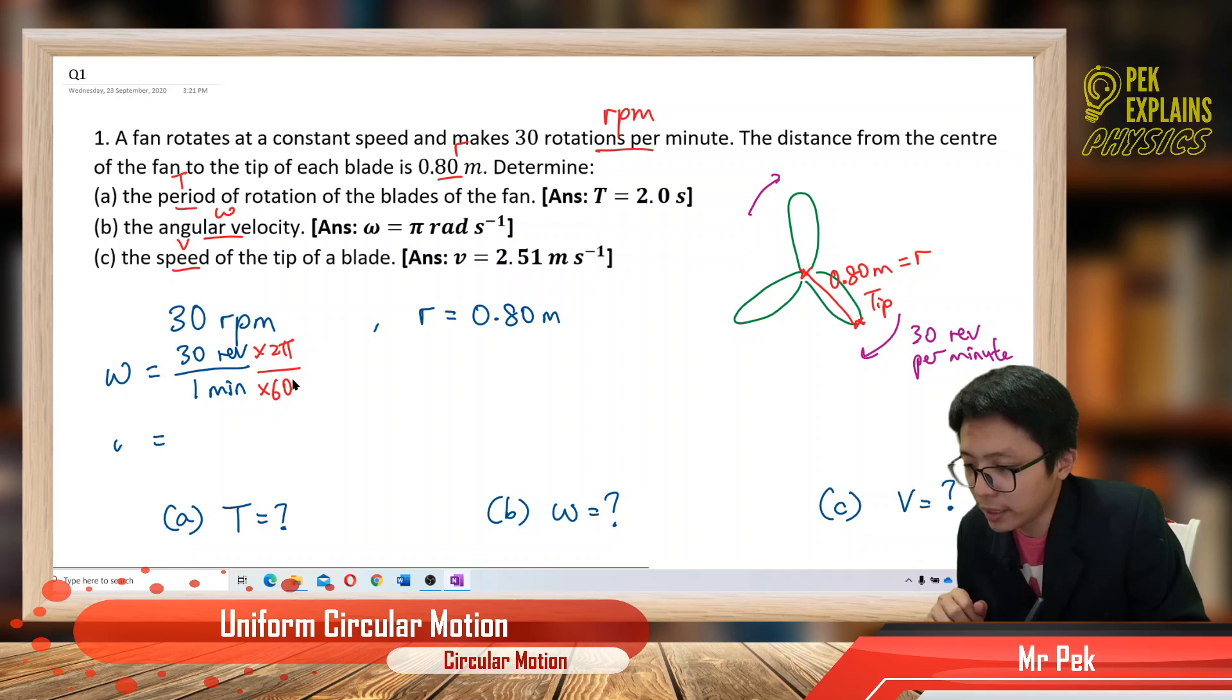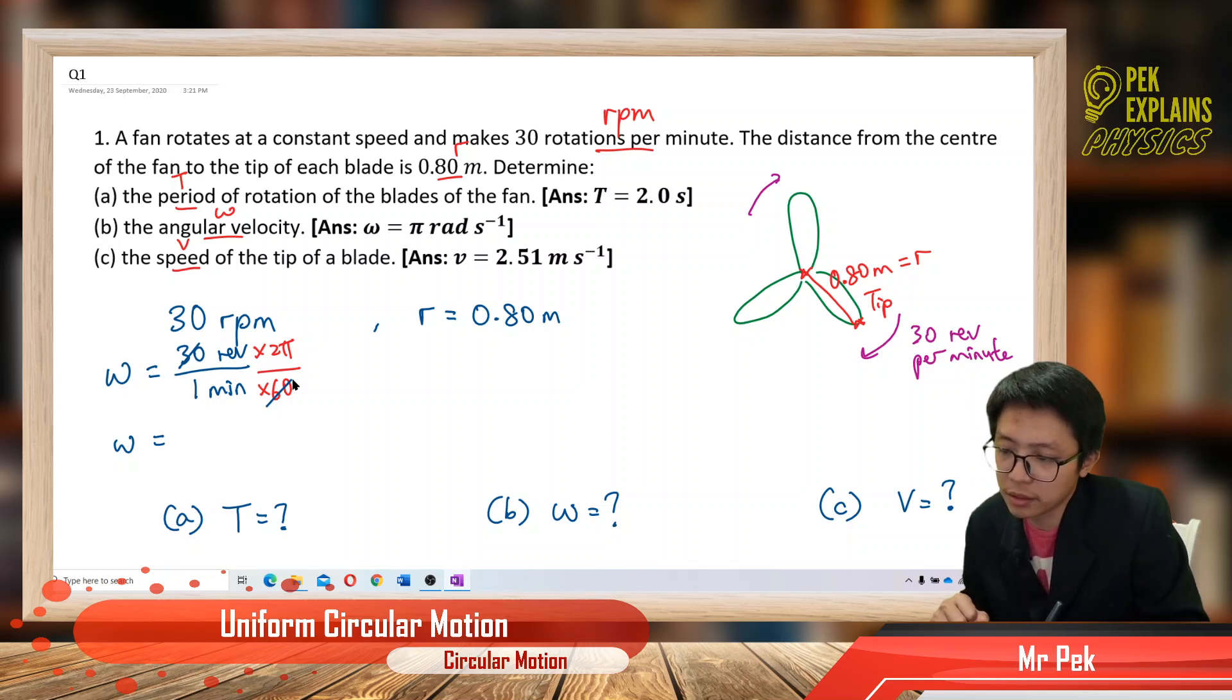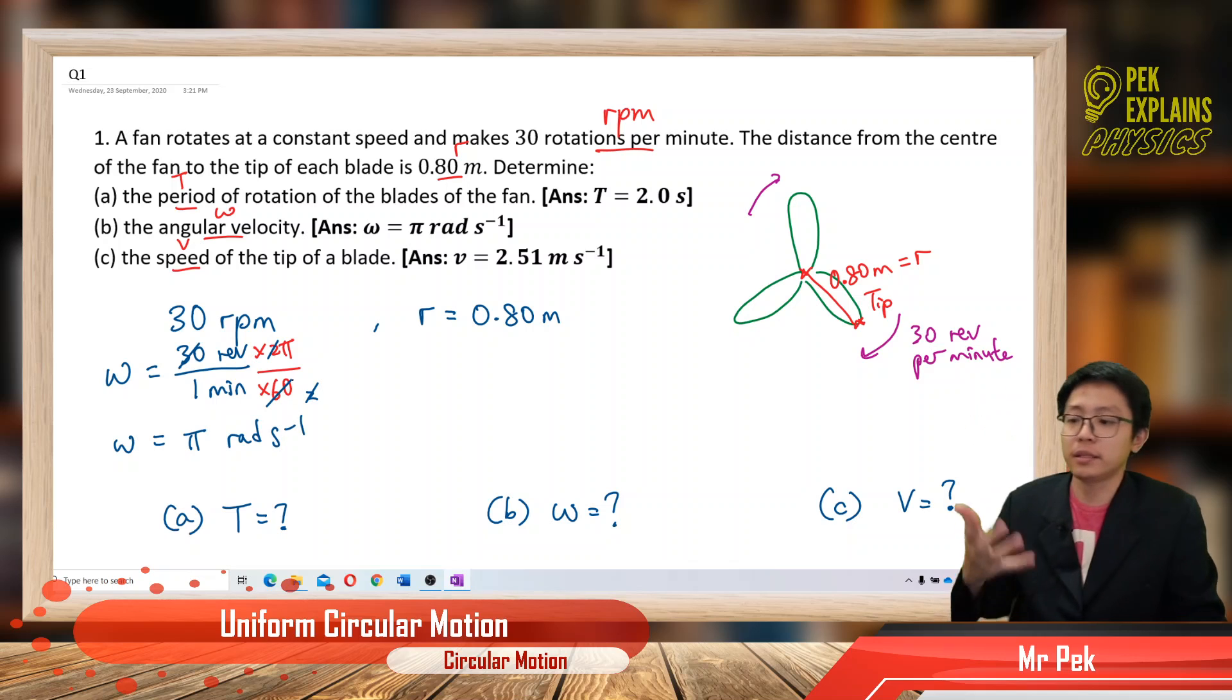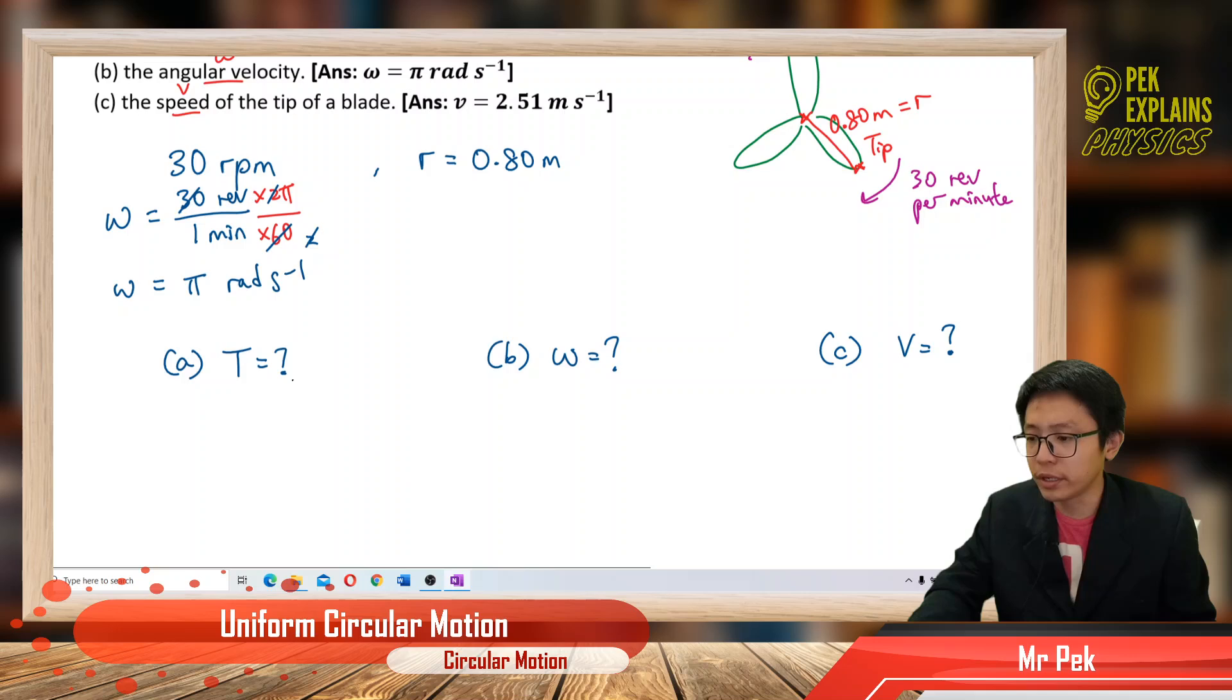So the omega we get here is... you just cut 30, 60, so it's 2. Cut again, we have π radian per second. That is omega.